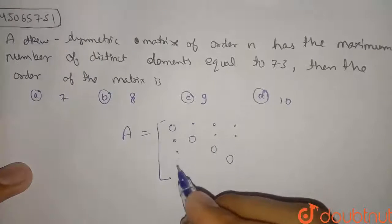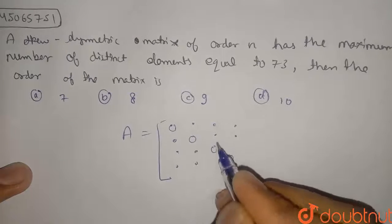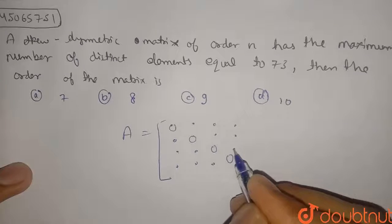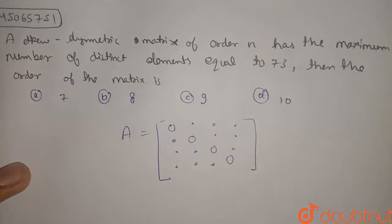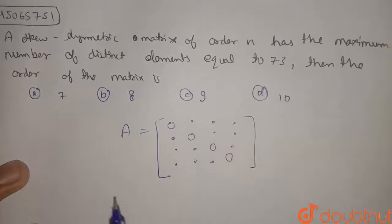So it will be one, two, three, this will be four. And suppose this is a skew-symmetric matrix. So diagonal elements are zero.